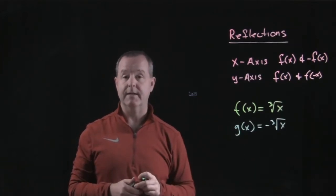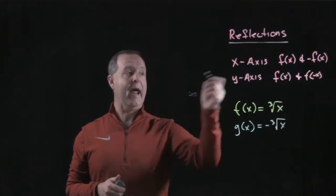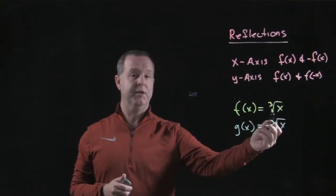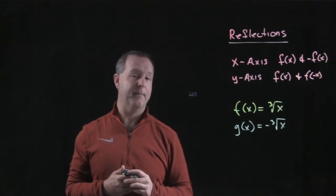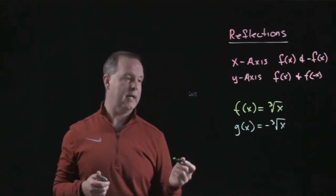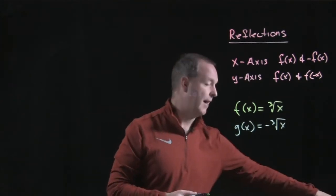You can see that this is reflected about the x-axis. I have the basic function compared to its basic function, but one with the opposite sign. So what does that look like? Well, if you were to graph that out.